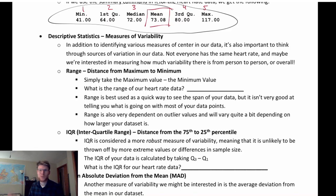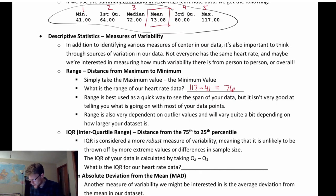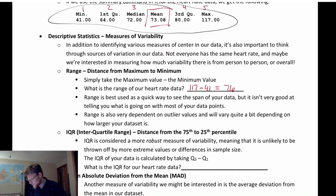Probably the simplest measure of variability would just be the range of our data — the distance from the minimum data point to the maximum data point. For the heart rate data from before, the range is 117 minus 41, which comes out to 76. That tells us what range our data is spread out across. However, the range is probably not the best measure because it depends on how large our sample is — a really small sample will have a much smaller range. It also doesn't tell us a lot about what's going on between the minimum and maximum values.